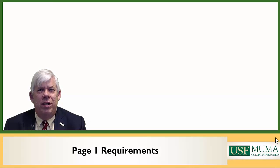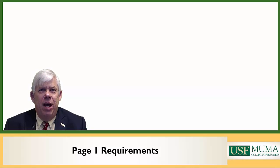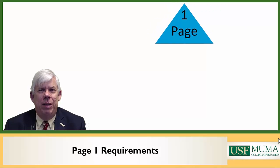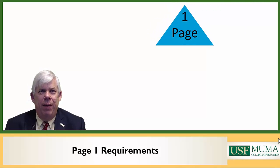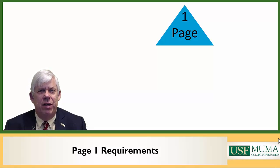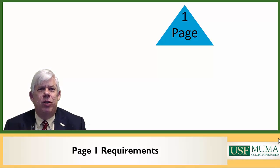When a page one is constructed for the MUMA Case Review or the Journal of IT Education discussion cases, there are only three absolute requirements for that particular page one. The first is that it only be one page. As we have indicated, it's going to serve as a potential abstract and a way of deciding whether or not to adopt a case. If it goes past one page, it becomes too long.